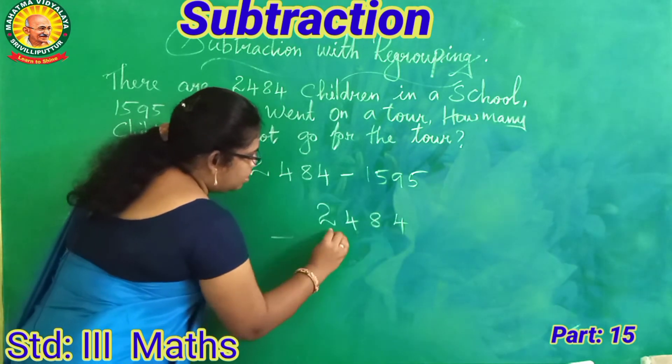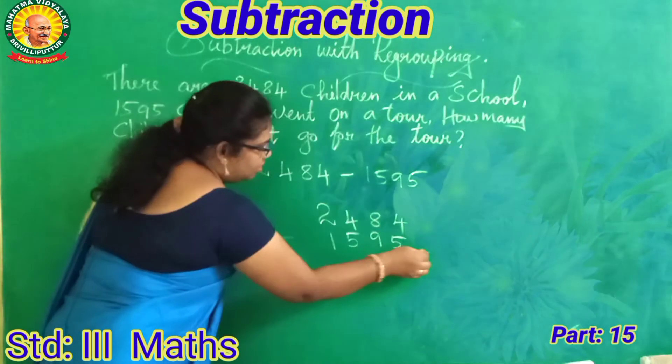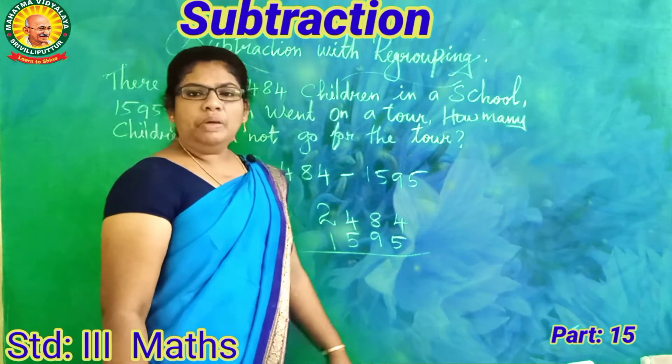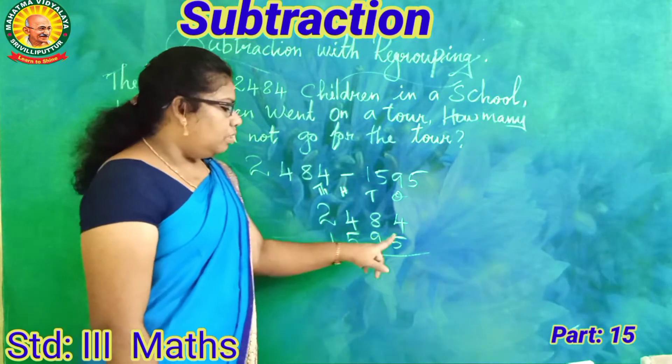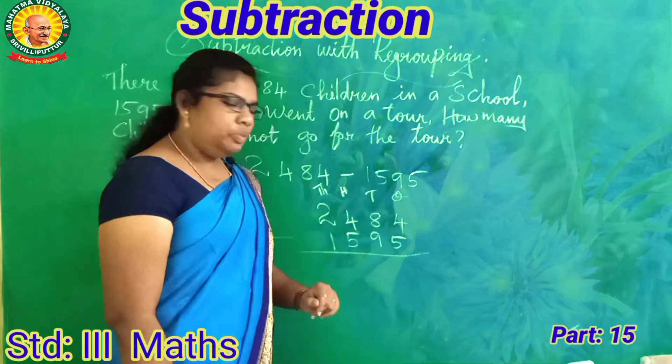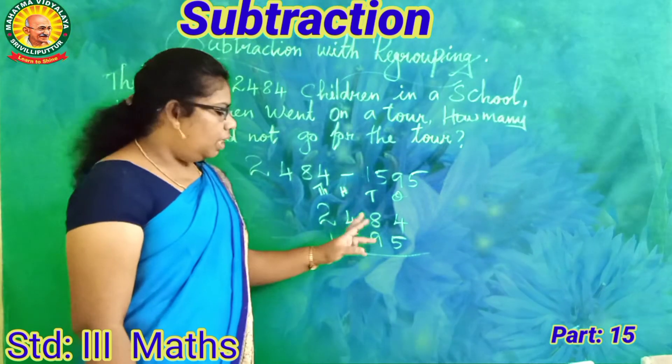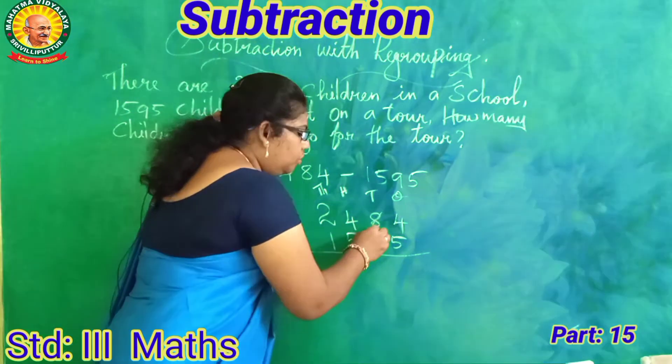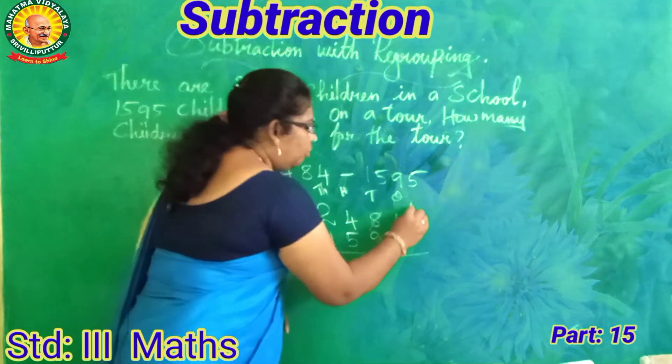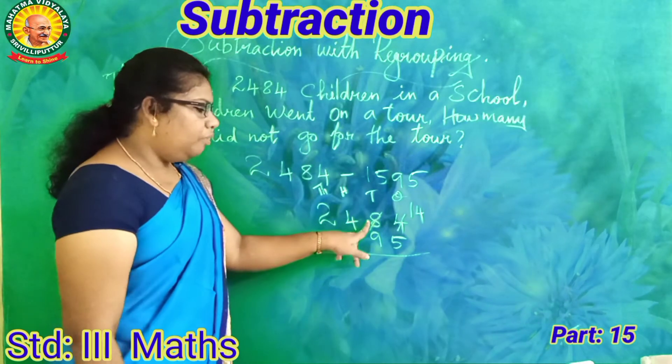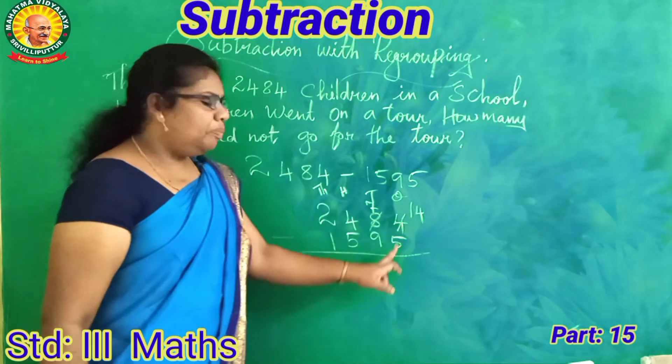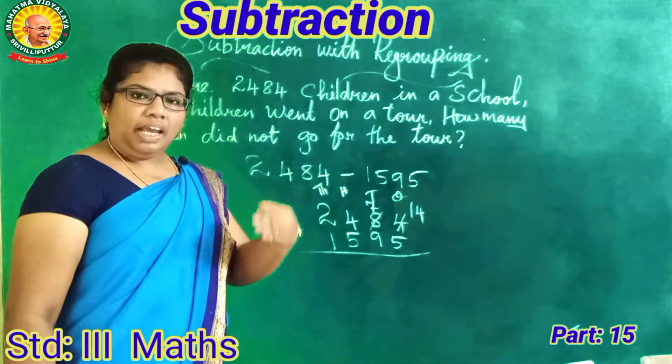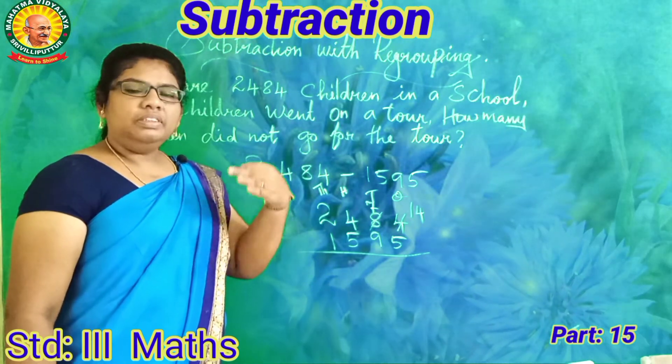2484 minus 1595. And we start to subtract from ones. Look at the ones place, four and five. Four is smaller value than five. So we have to borrow from tens. Eight tens, borrow one, so seven tens remain. Four plus ten equals fourteen. Fourteen minus five equals nine. How many are remaining? Nine.